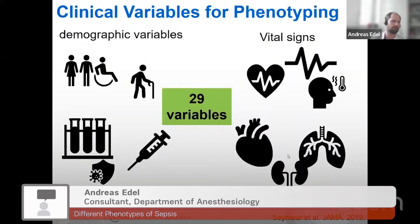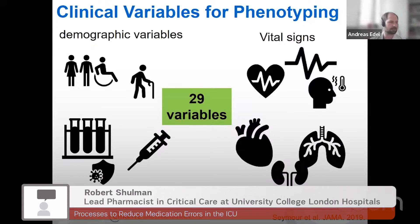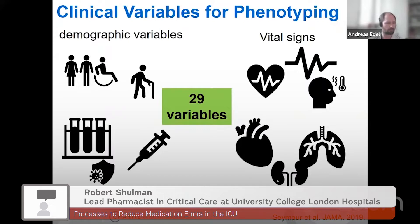To analyze the different phenotypes, they selected 29 variables out of the routine dataset of those retrospective trials. These included demographic variables such as age, sex, and co-morbidities, as well as variables from clinical records — vital signs like blood pressure and temperature — but also lab values including markers of inflammation and organ dysfunction. All those variables were fed together into a machine learning clustering algorithm.